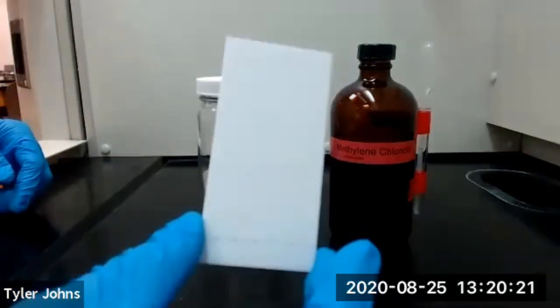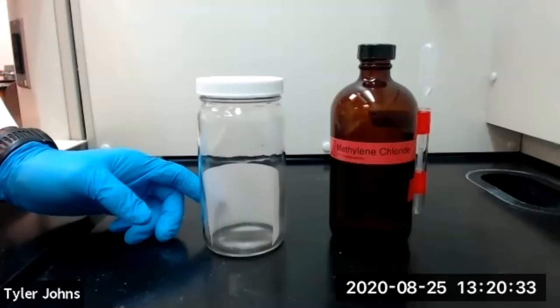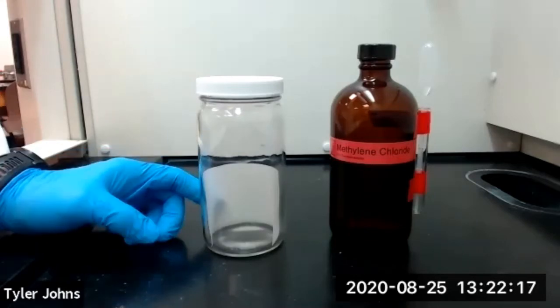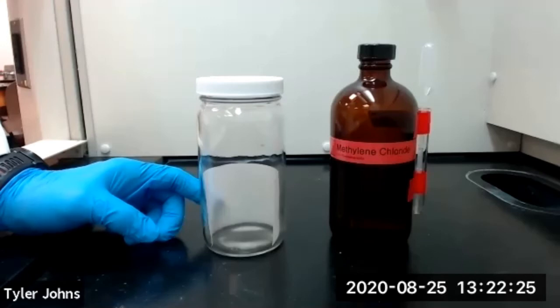We'll then place our TLC plate inside the development chamber and allow the TLC plate to develop. We'll remove the TLC plate once the solvent front is within one to two centimeters of the top of the TLC plate. And you need to remember to mark the position of the solvent front on the TLC plate as soon as you remove the TLC plate from the development chamber. This way you can calculate your RF values.